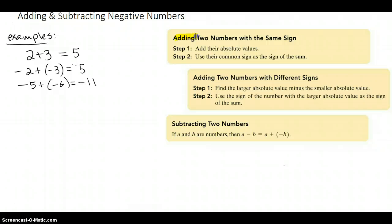So that was adding negative numbers with the same sign. Now let's go over adding two numbers with different signs. The steps are to find the larger absolute value minus the smaller one. Step 2: use the sign of the larger absolute value.